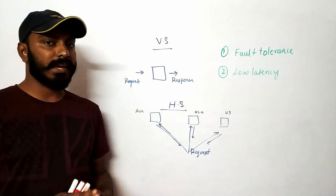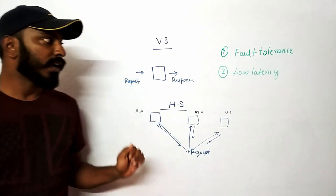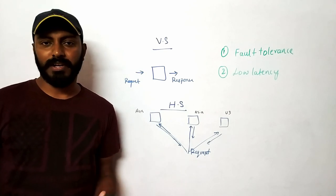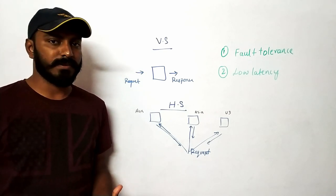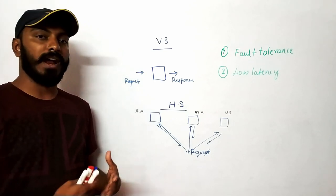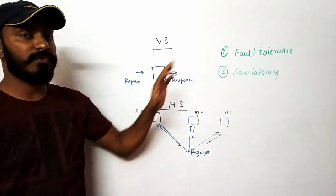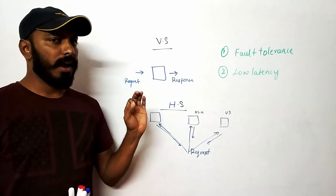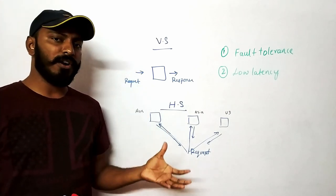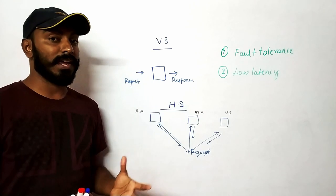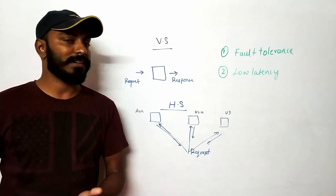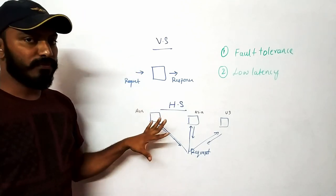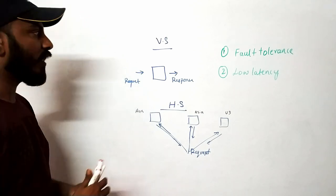So what are the advantages of having a distributed system? First is saving money, already explained. The other main important advantage is fault tolerance — what that means is if any fault occurs, your system can actually tolerate it.